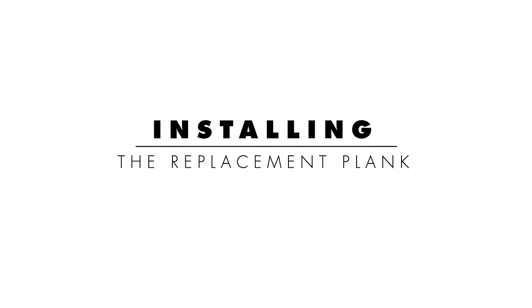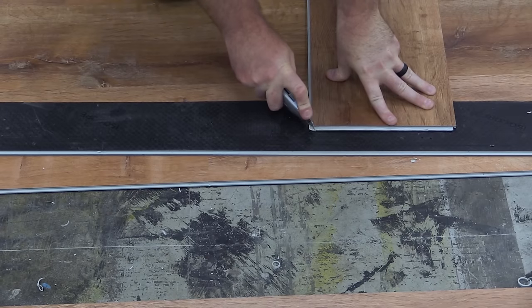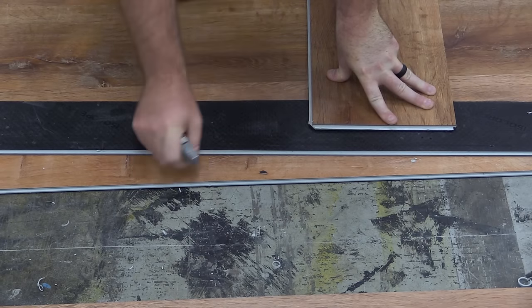Prepare the replacement plank by removing the lock on the long and short sides. Using a sharp utility knife, cut off the corner where the two grooved edges meet.